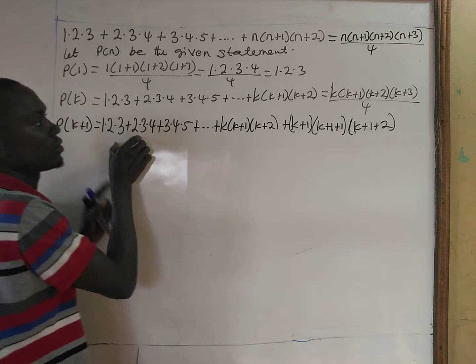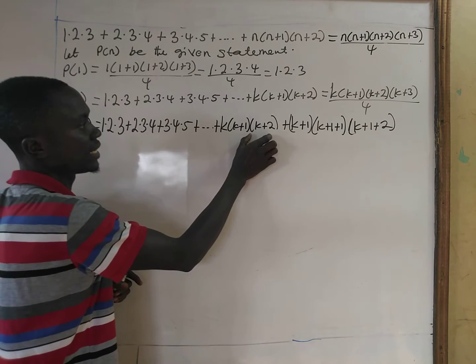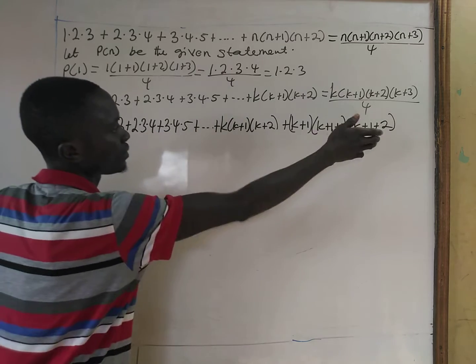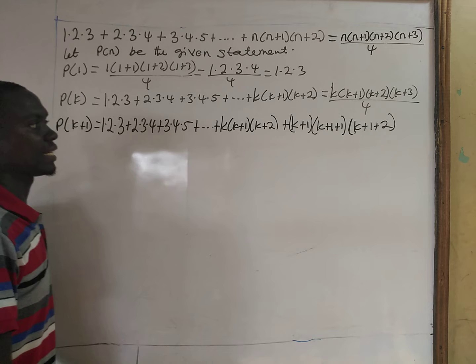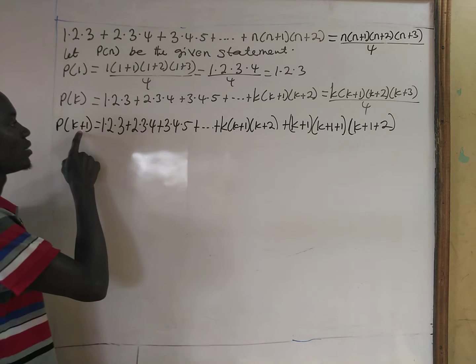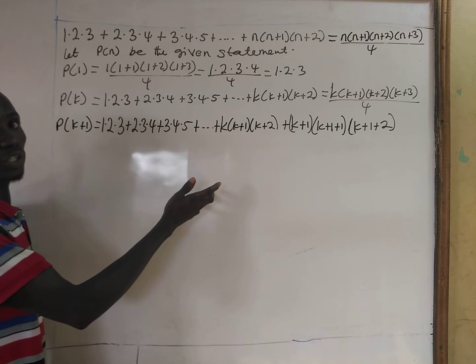So we have P(k) and we are adding the (k+1)-th term to it. The sum from the first term up through the (k+1)-th term is our P(k+1).